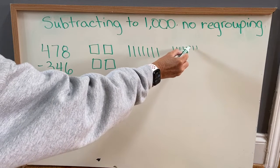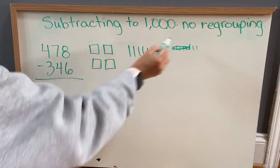One, two, three, four, five, six. So we're going to cross those out.